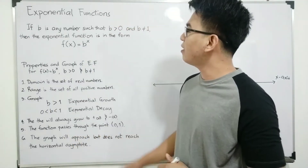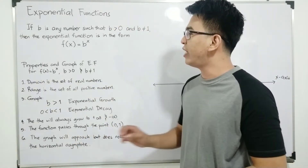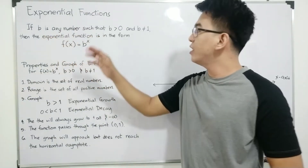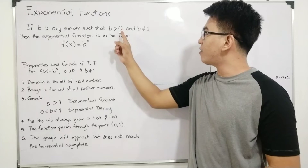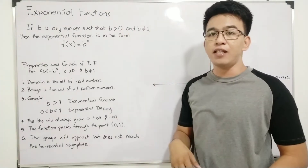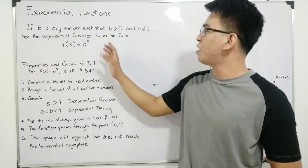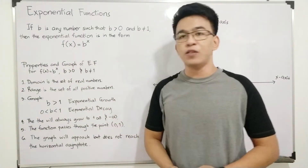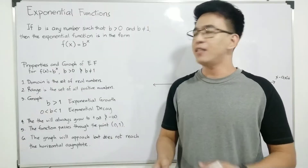We have here the definition of exponential functions, wherein if b is any number such that b is greater than 0 and b is not equal to 1, then the exponential function is in the form f of x is equal to b raised to x.